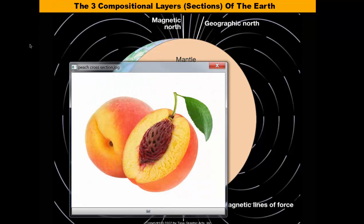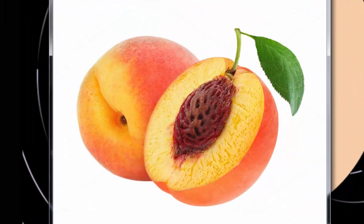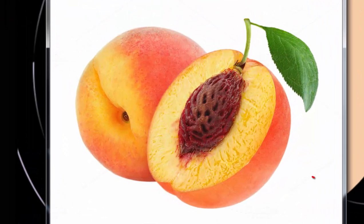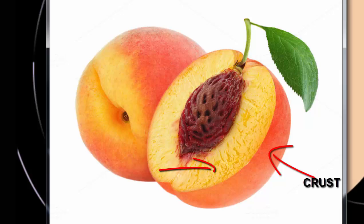When you cut open a peach, you'll notice there's a thin skin on the outside — that's like the crust of the earth. And then below the skin, you have the yellow meat part of the peach, which is more like the mantle; it's a lot thicker than the crust. And then once you get through the meat of the peach, you get to the pit, which is more like the core found at the center of our earth.